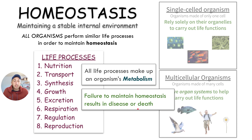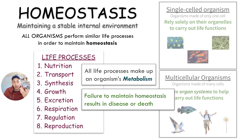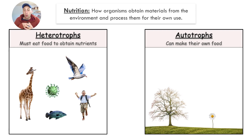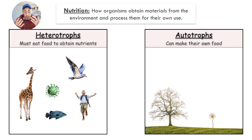Failure to maintain homeostasis inside an organism results in disease or death. Organisms need organic compounds, inorganic compounds, and minerals — these are all referred to as nutrients, things that the cells use to create the structures and organelles inside the cells in order for them to function. Organisms need many different nutrients and materials in order to function.